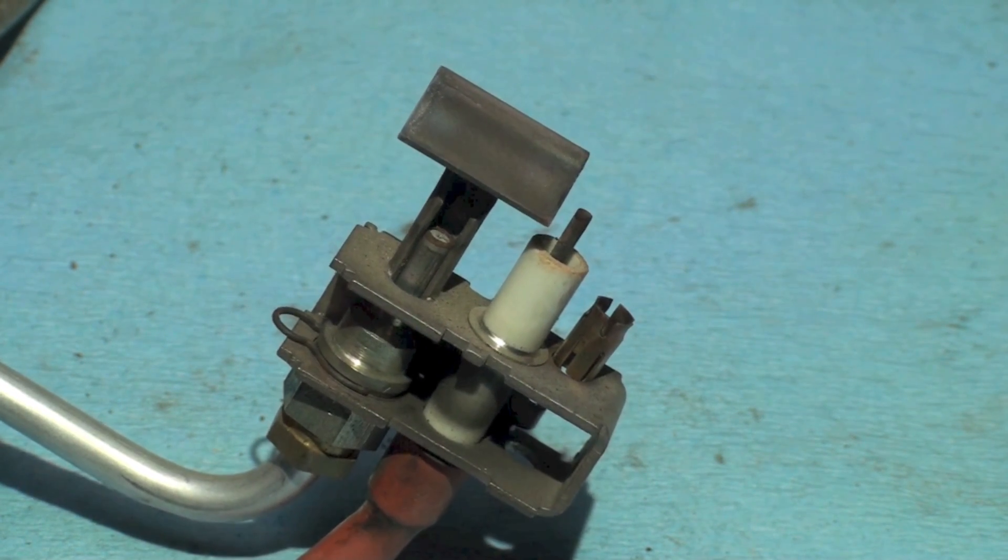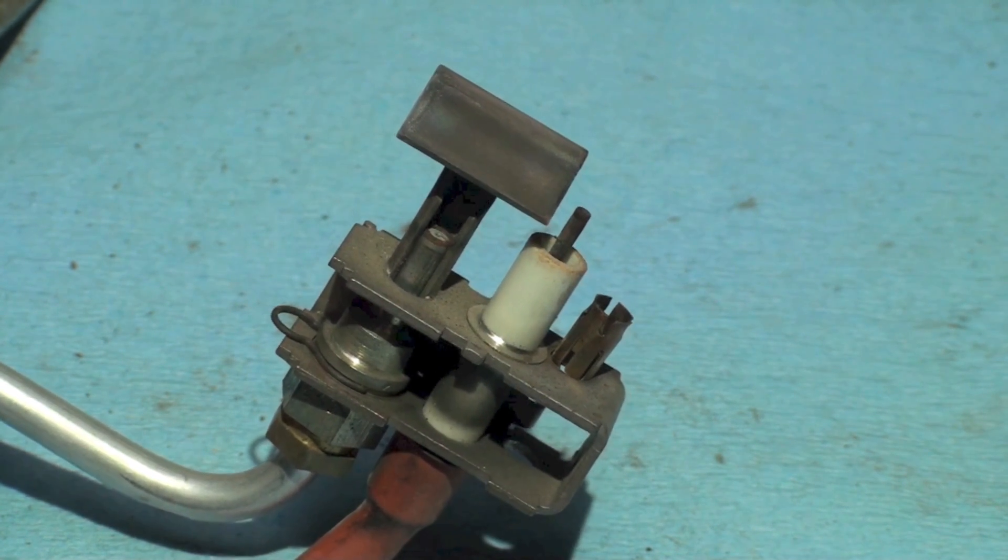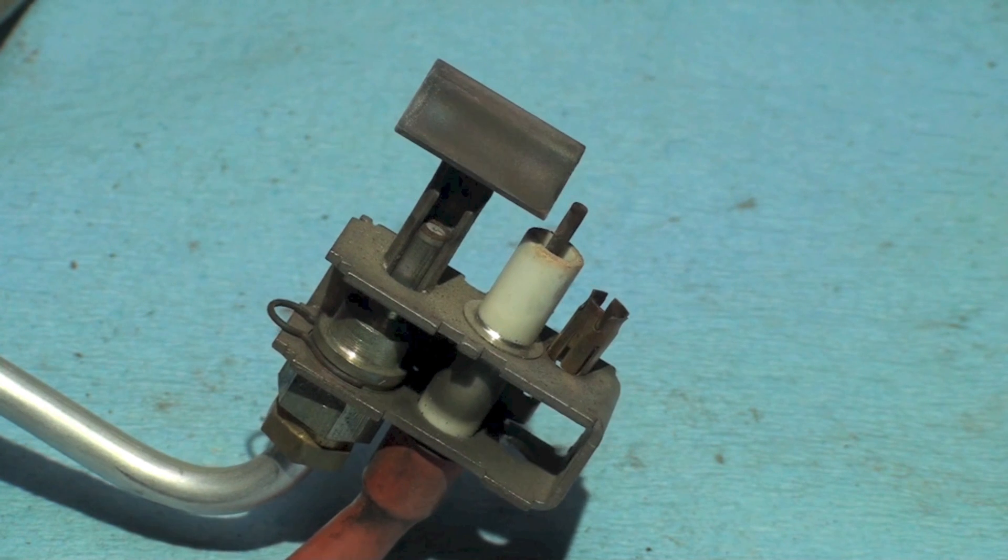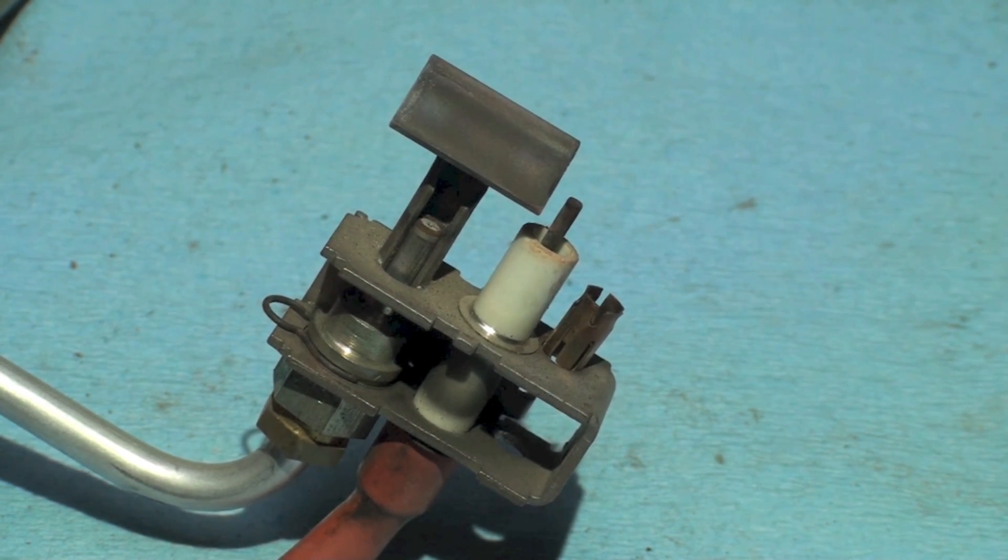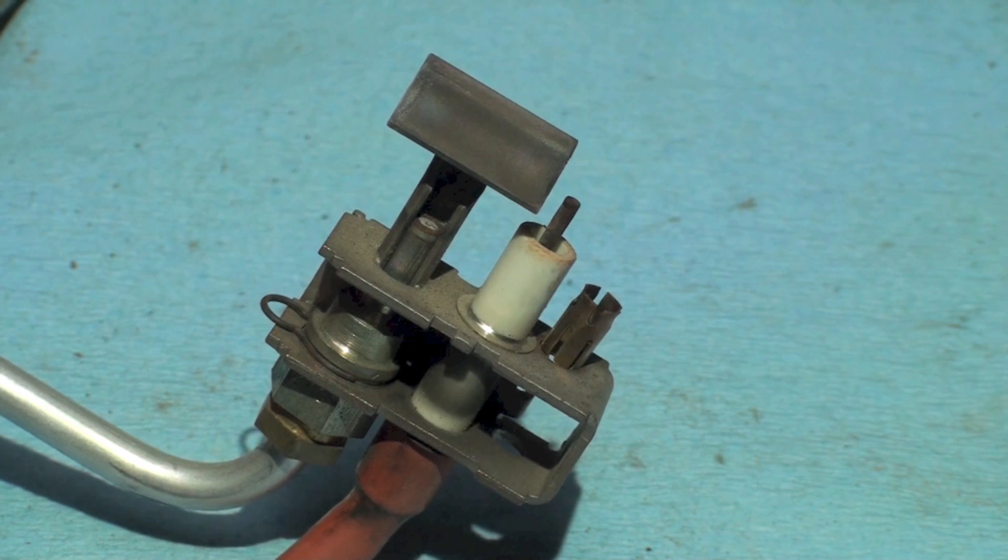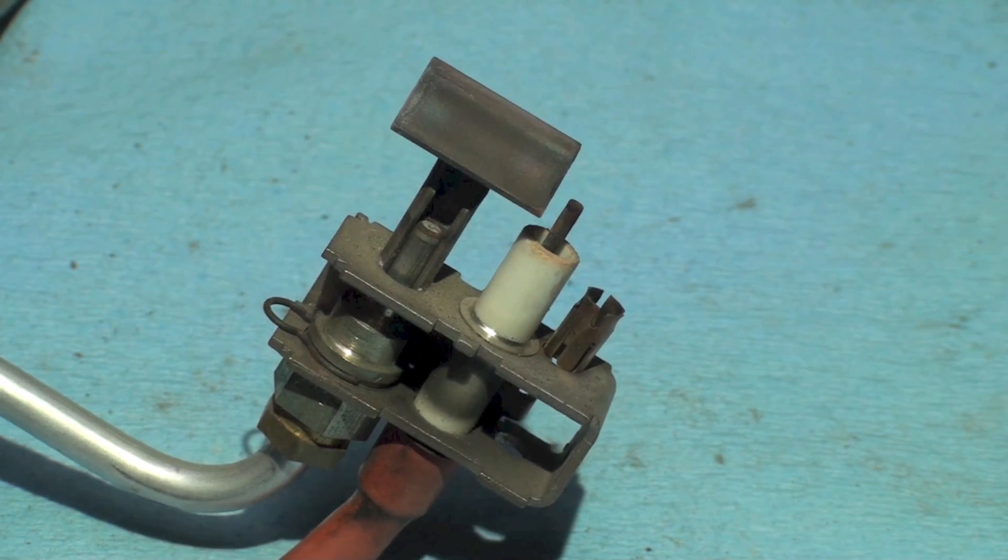Then of course it warms that mercury in the pilot assembly. That's how the mercury switch works on the Rheem RGDA gas furnace.